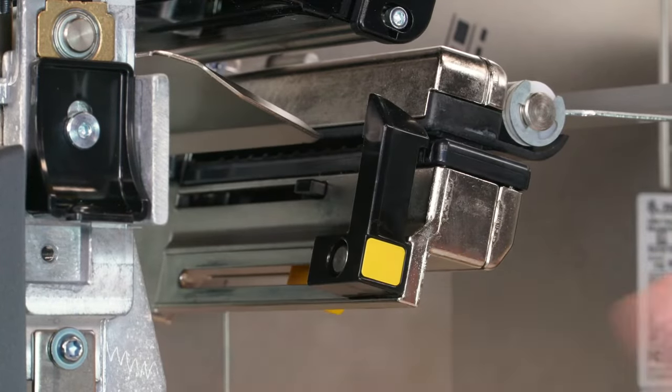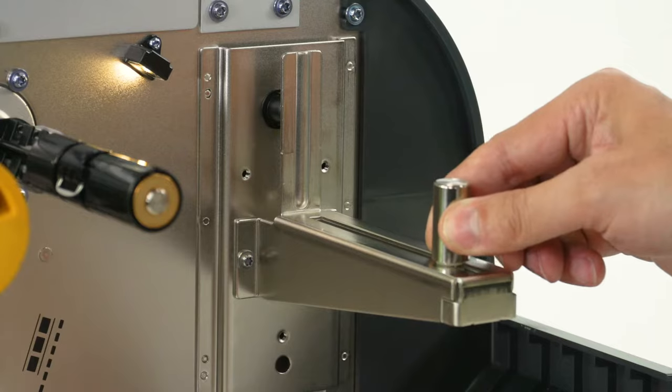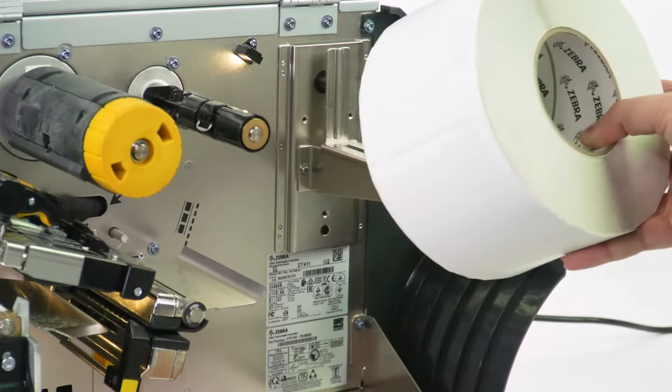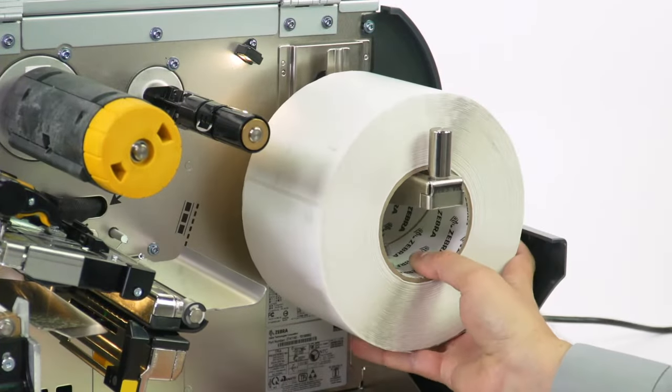Slide the media guide out. Slide the media supply guide out. Place the roll of media on the media supply hanger and push the roll back.